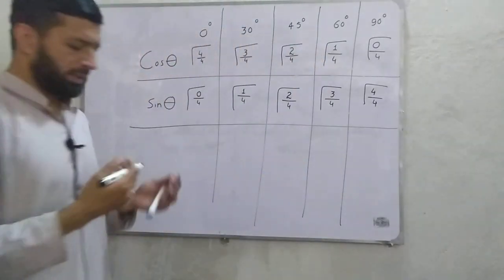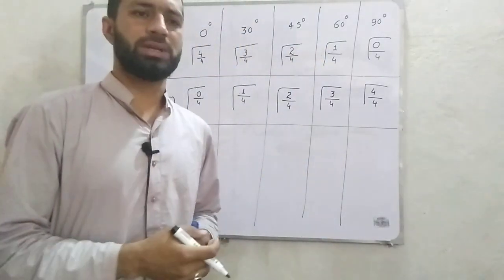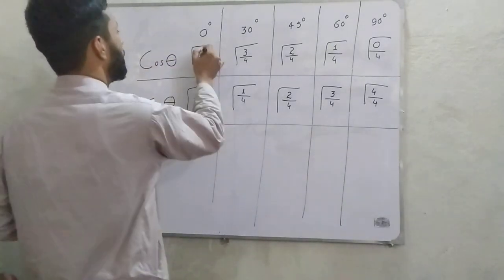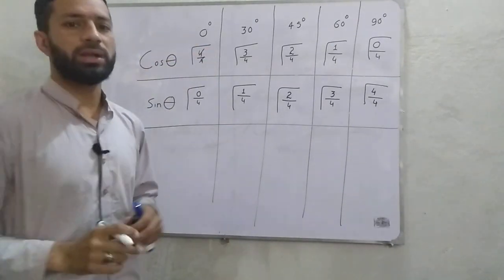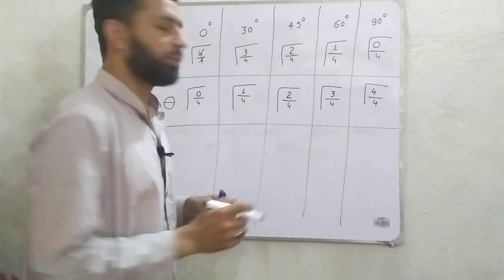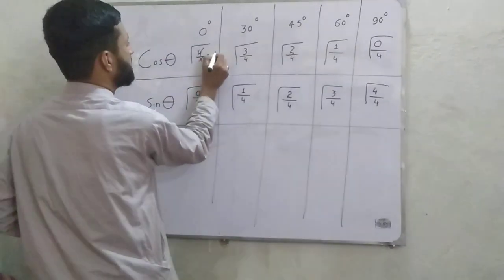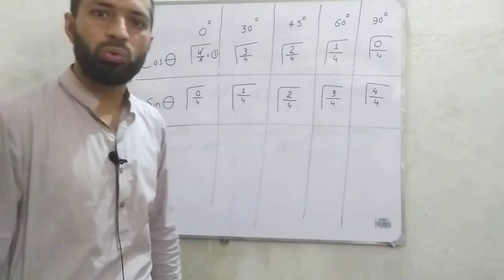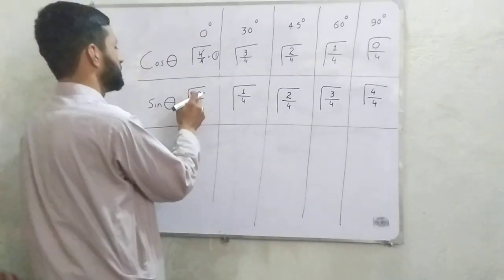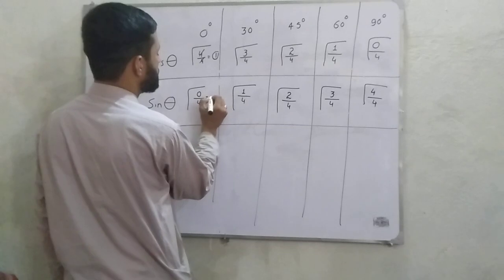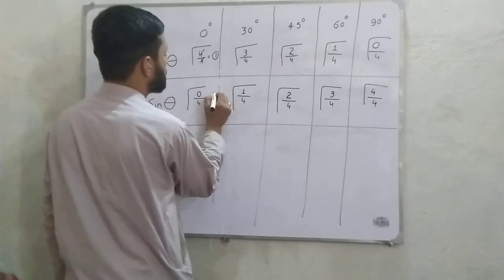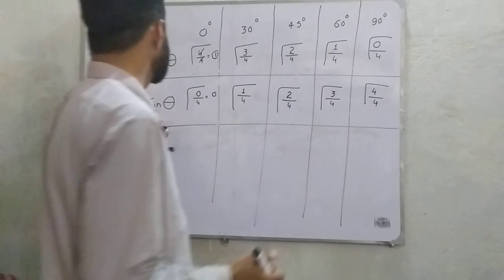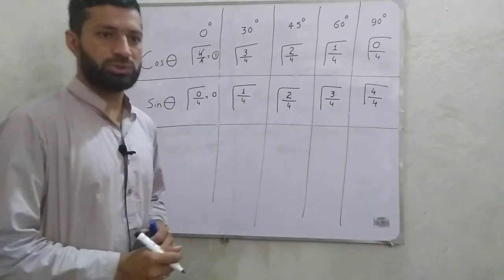Now observe some values. For cos 0: 4 divided by 4 gives 1, and the square root of 1 is equal to 1. So that is why cos 0 is equal to 1. For sin 0: 0 divided by 4 gives 0, and the square root of 0 is again 0. So sin 0 is equal to 0.